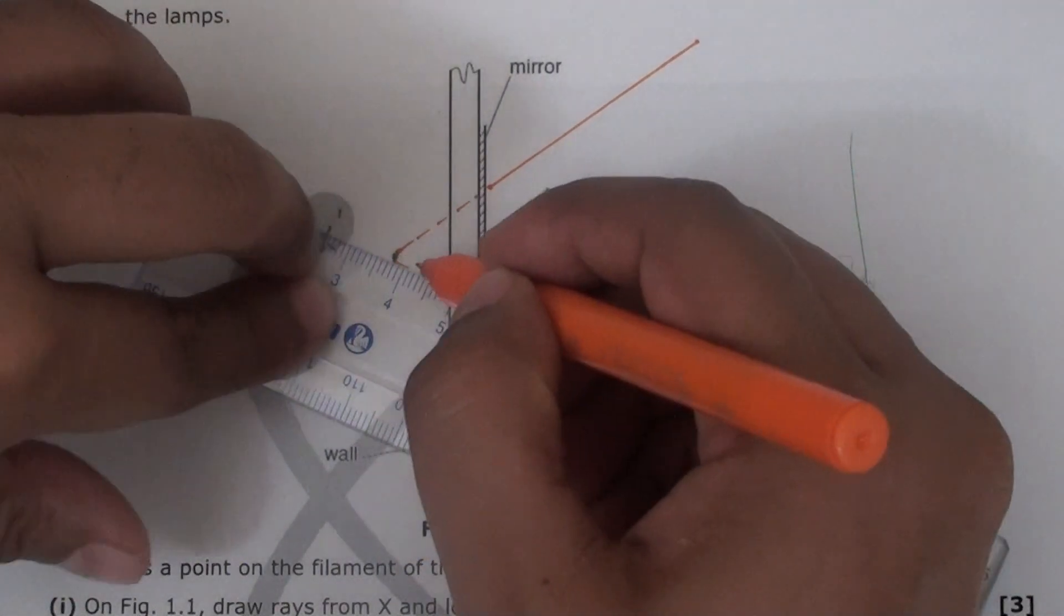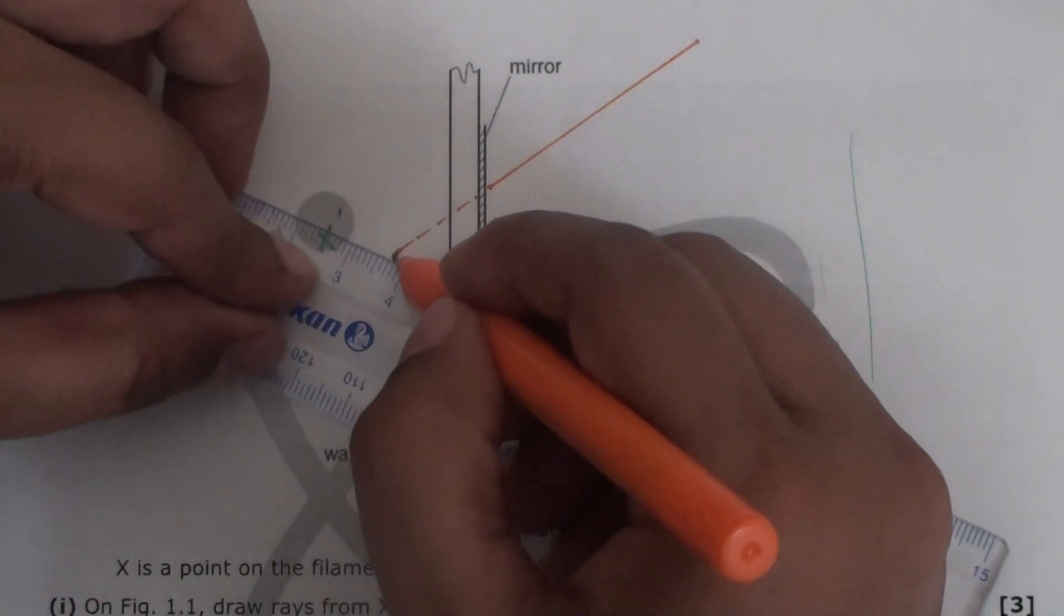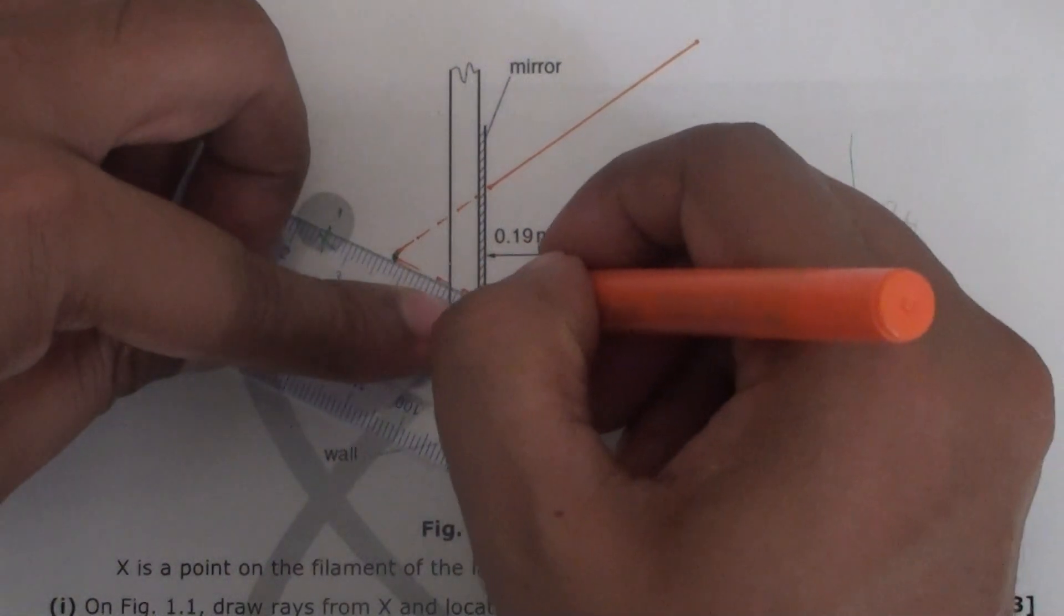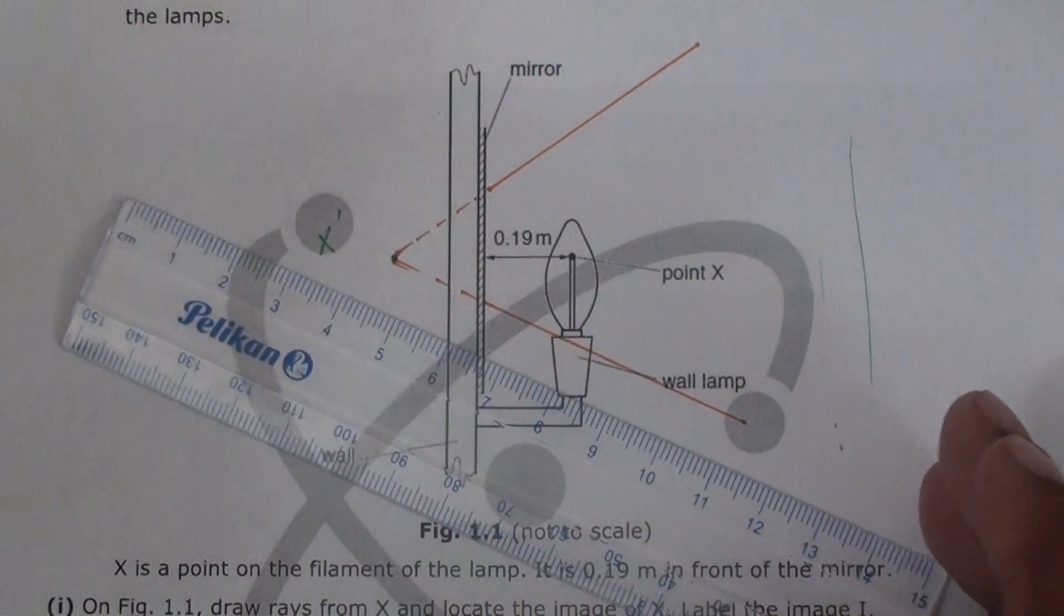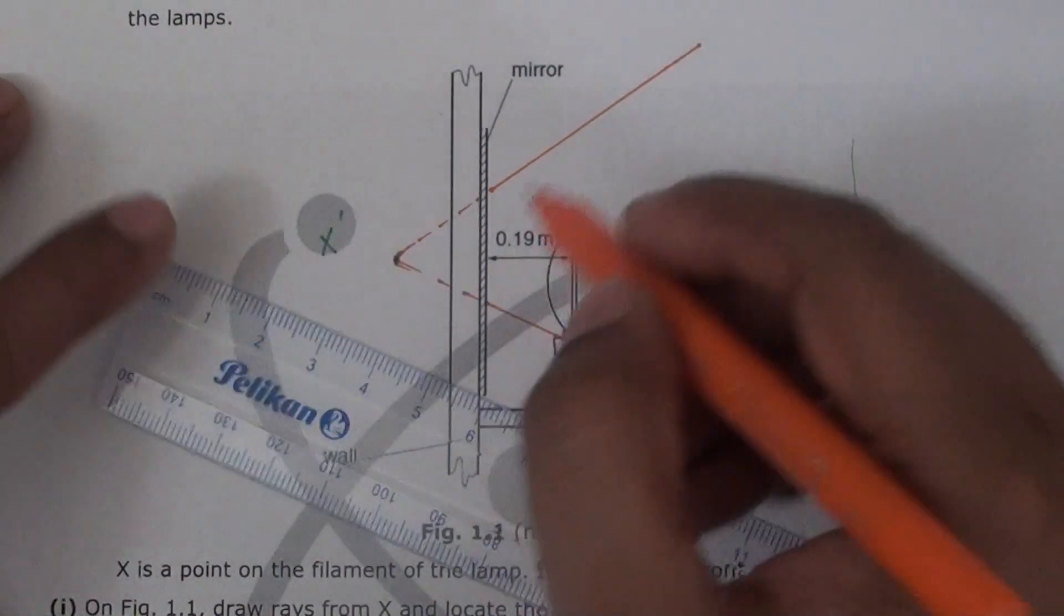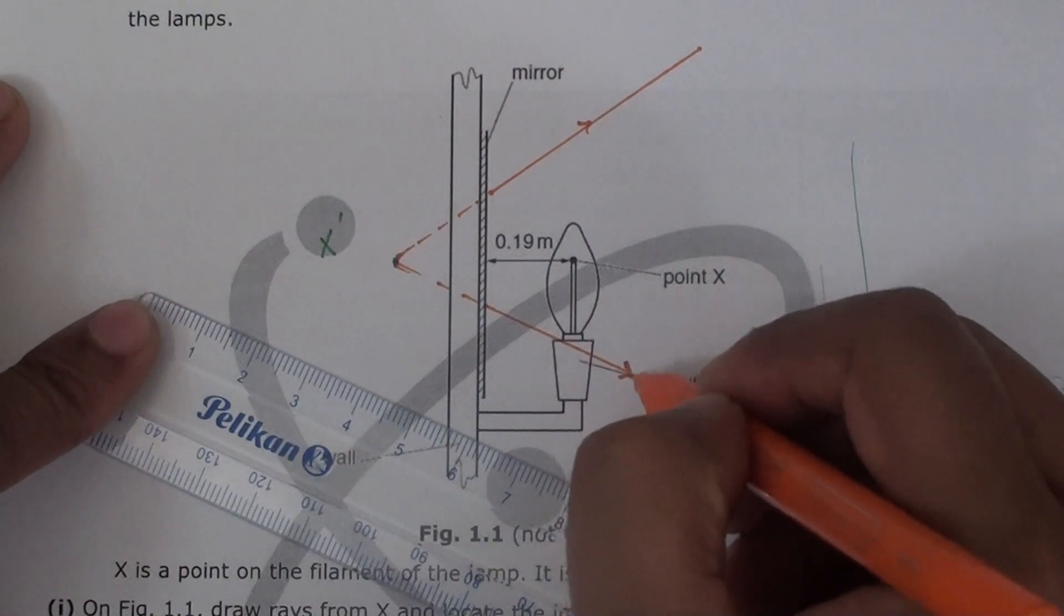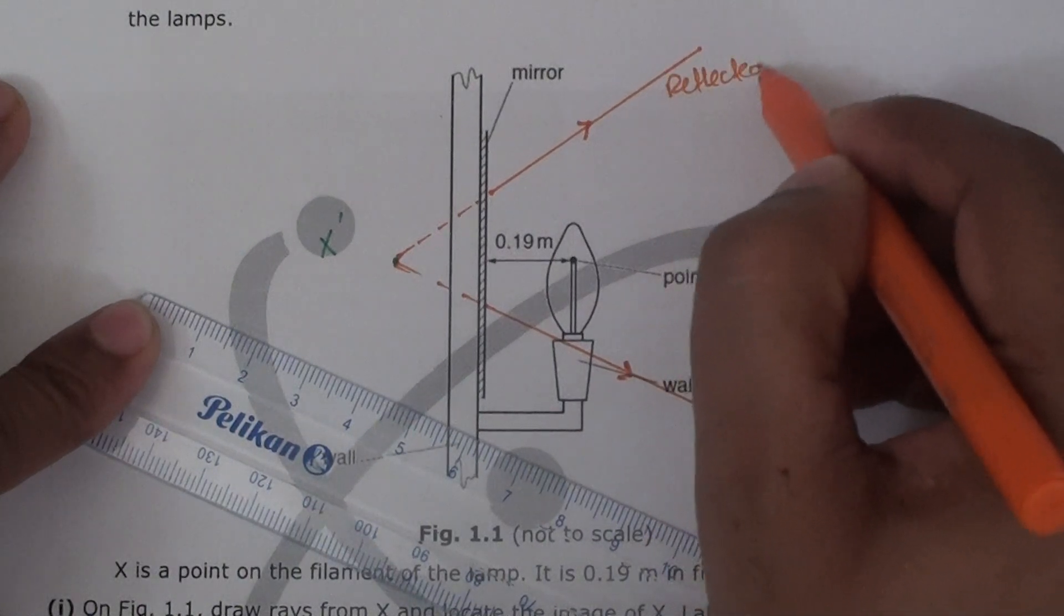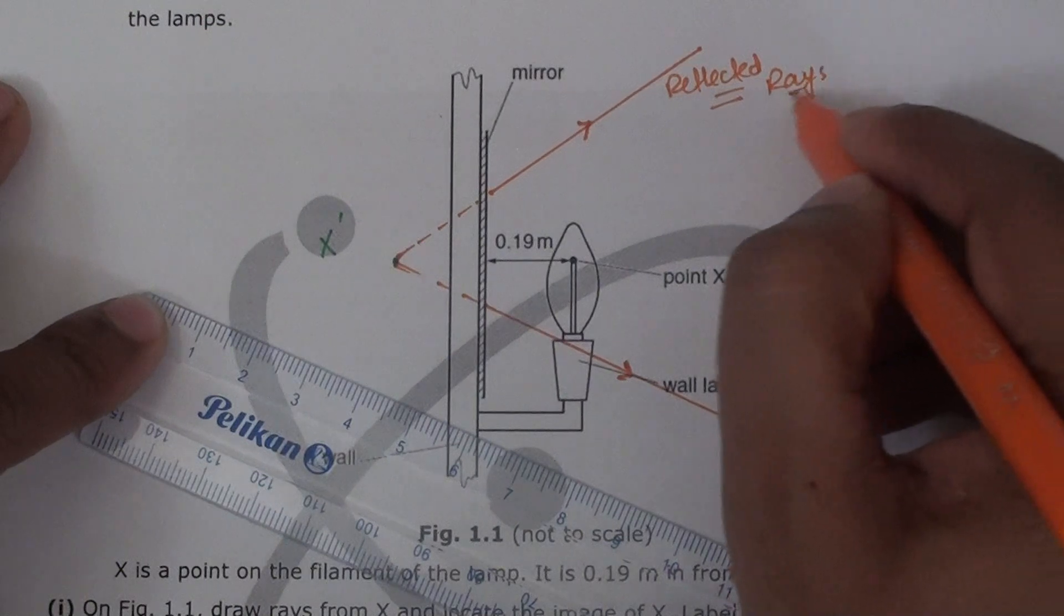And the same thing I can do on the other side. There might be some parallax while drawing, so I have to readjust myself. There you go. So virtual side dotted line, and real side then I'm going to draw. So these are the reflected rays. They are going outwards. These are the reflected rays.